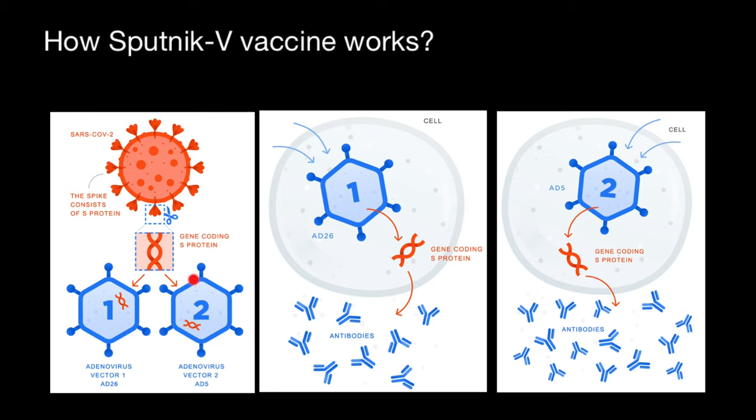Take a look. The first shot was based on the vector, which we call ad26. And the second is based on the vector or strain, which we call ad5 or adenovirus 5. This time organism would produce, take a look, compare this picture and this new response, immune response, which is going to be much faster. And again, first time we get a vector ad26, second time ad5.